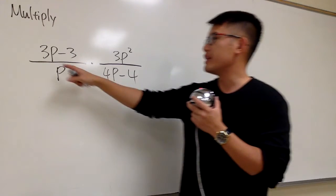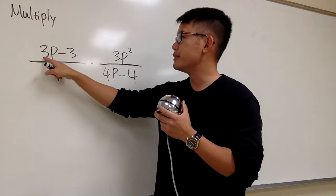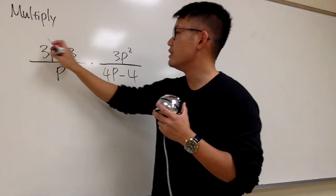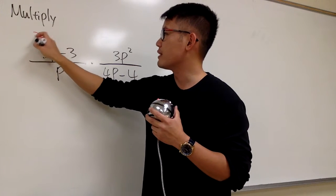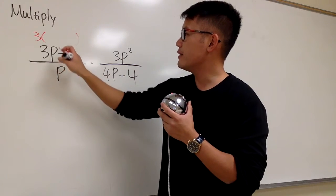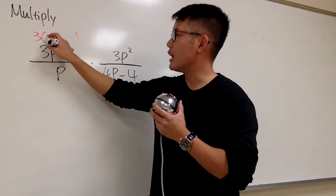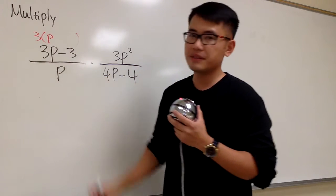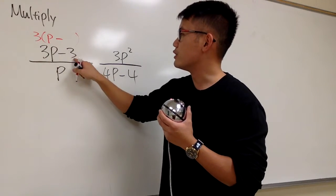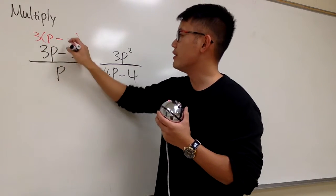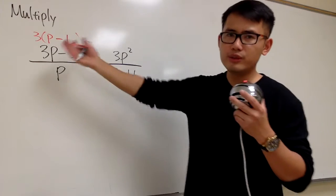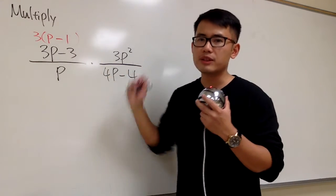So let's go ahead and look at this. 3p minus 3 — well, they both have the 3. So therefore, I can factor out 3, right? And the first term, we will have a p left, and then we have the minus. And the 3 was factored out, so we have a 1, right? So, 3 times p minus 1.